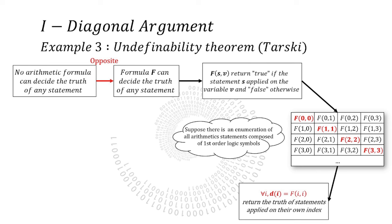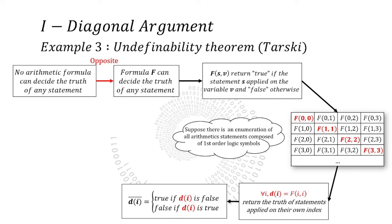Again, we can represent in a table the truth value of all statements applied on all variables. Again, we define the diagonal D, the truth of statements applied on themselves. But we also define counter D, the negation of the result of D. Now, does the statement counter D is true when applied on itself.